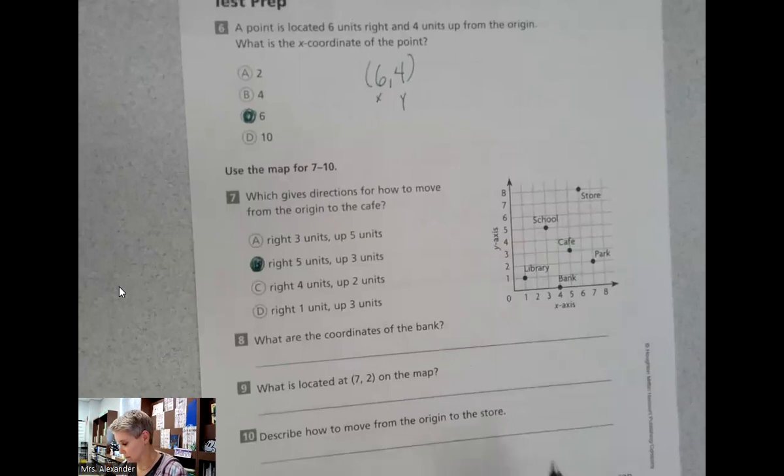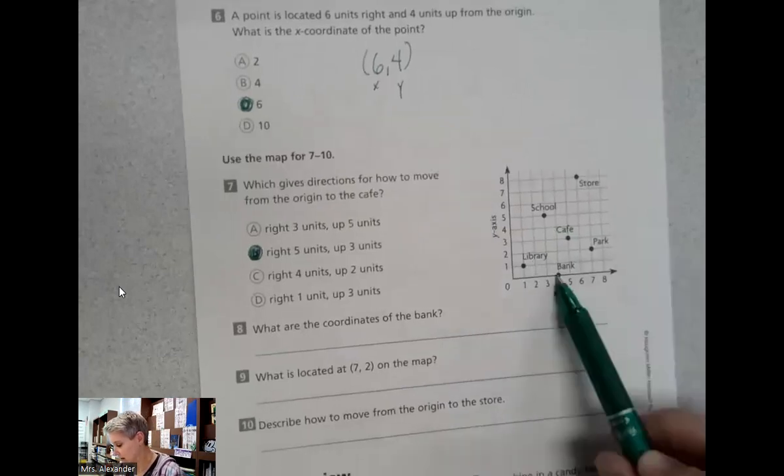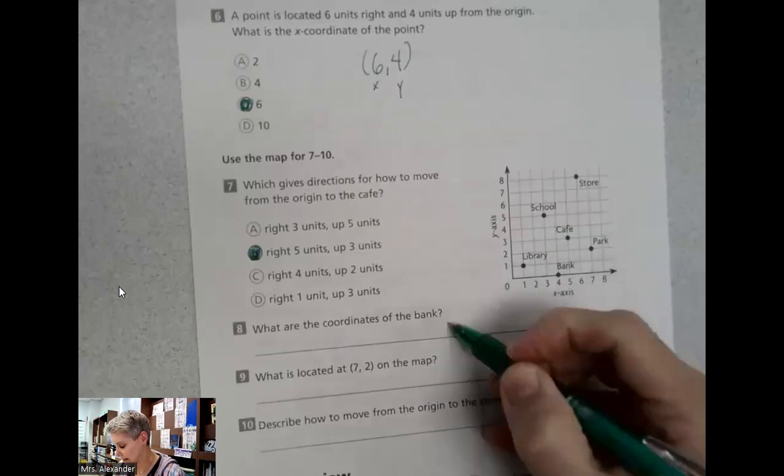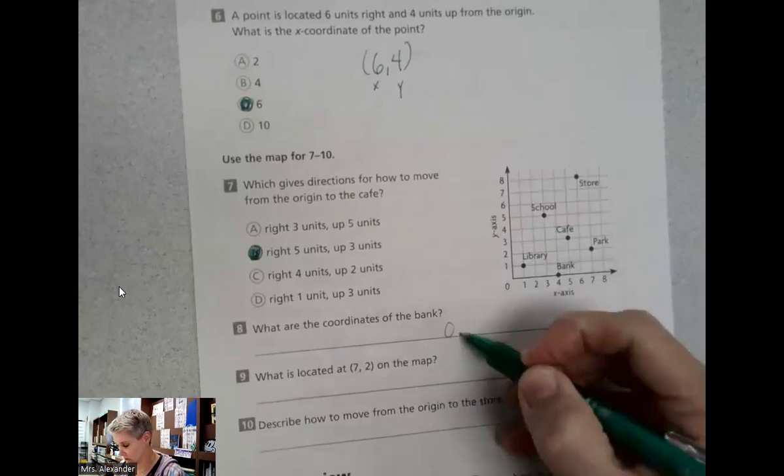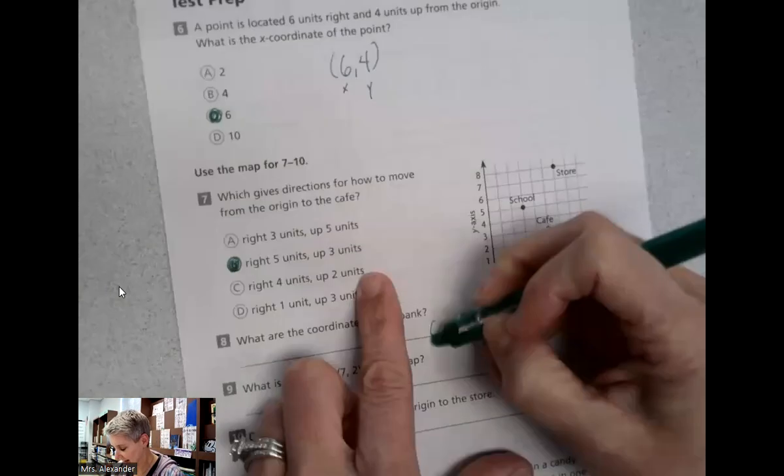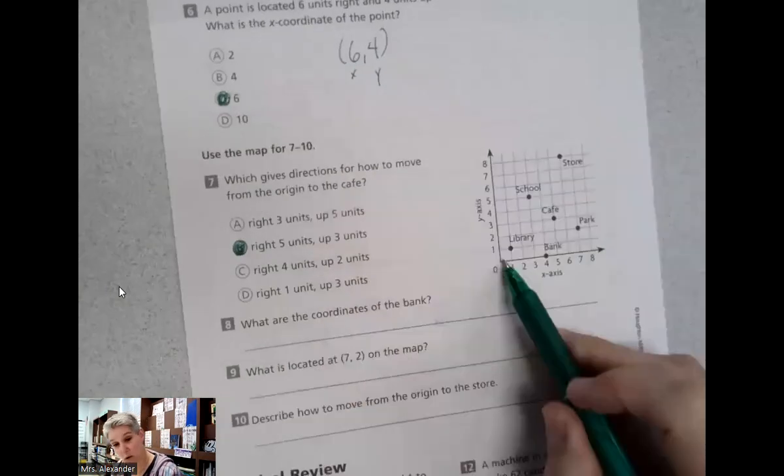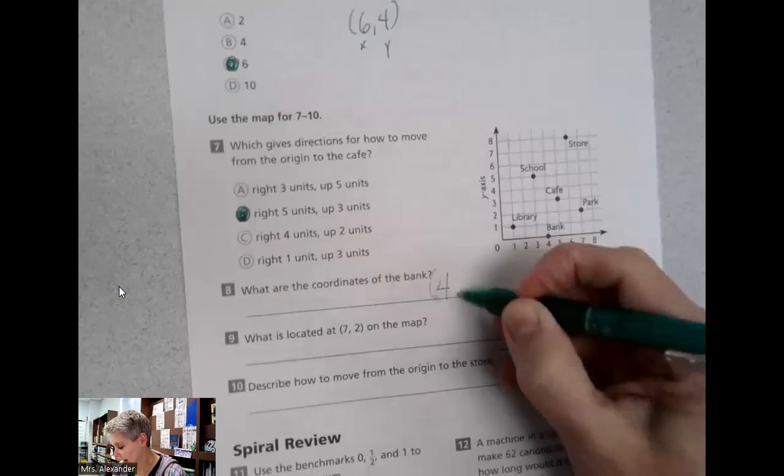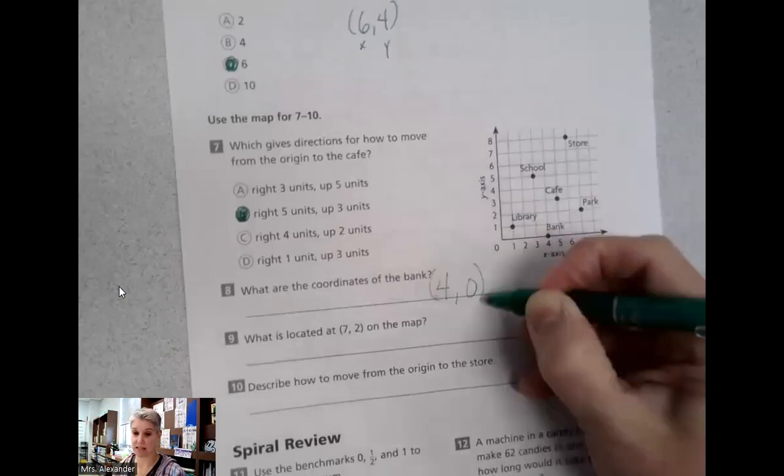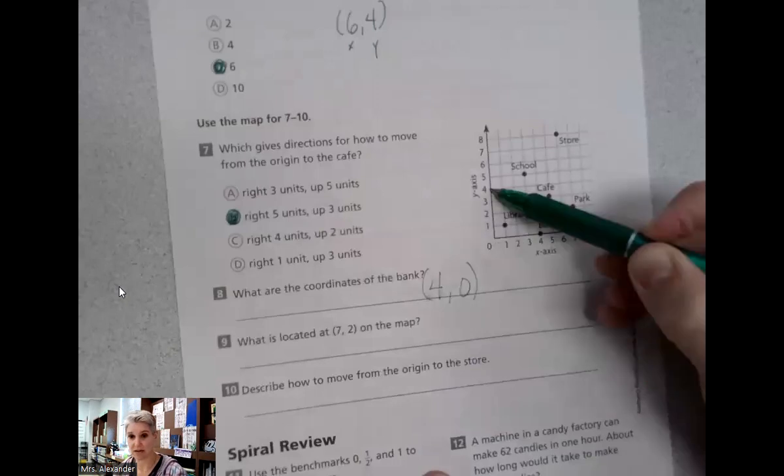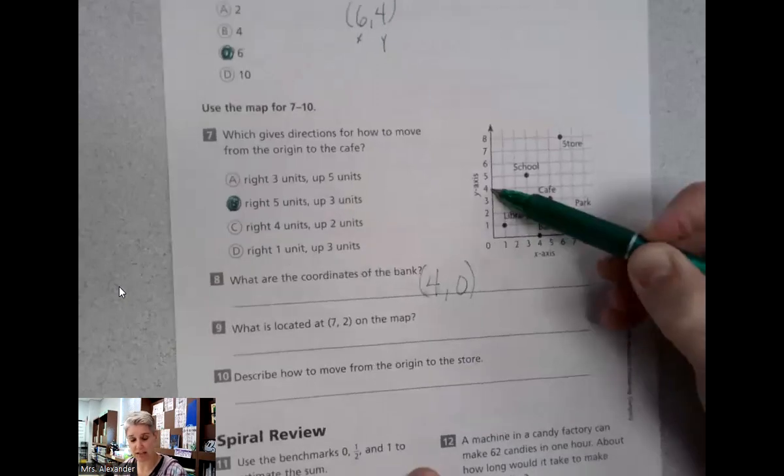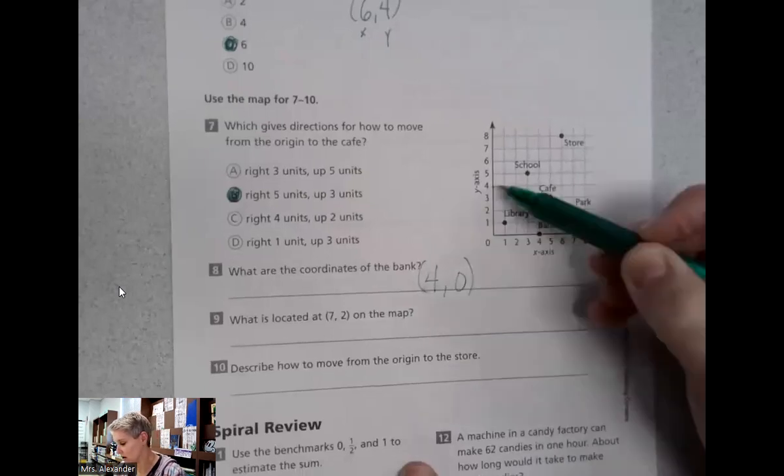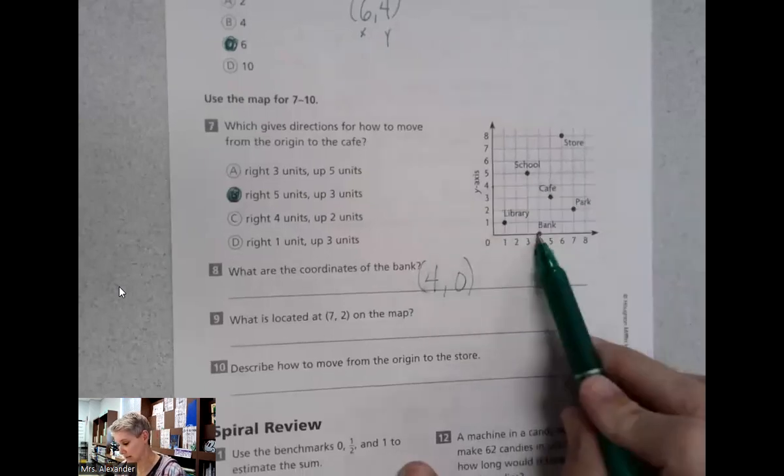What are the coordinates of the bank? Here's the bank. We stayed on the X axis, but we moved over four units. So that's four. We did not move up at all. There's my zero. If I would have done (0,4), I would have been here. And if I check to see if that's a reasonable answer, I would have found no, there's nothing there. Over four units, up zero.